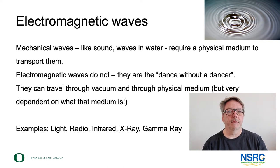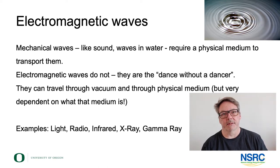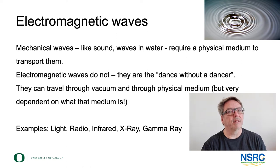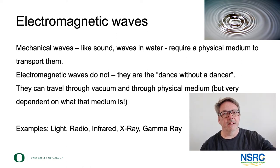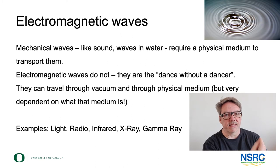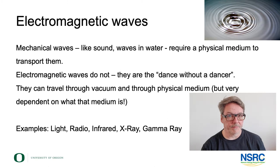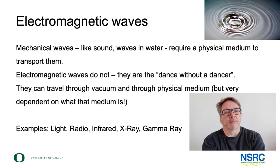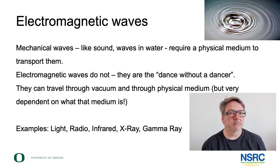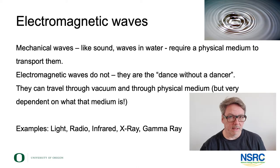Electromagnetic waves can go through some materials more or less well, but the important point is they are not carried by a medium — they travel through nothing. I sometimes like to say they're a dance without a dancer: we can identify a traveling form of energy, but we can't point to the matter that carries it. The energy is carried by nothing. Examples of electromagnetic waves include light, X-ray, radar, mobile networks, and Wi-Fi — all of these are electromagnetic waves.